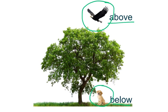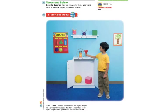So the two words that we will be practicing are above and below. Our essential question: how can you use the terms above and below to describe shapes in the environment?